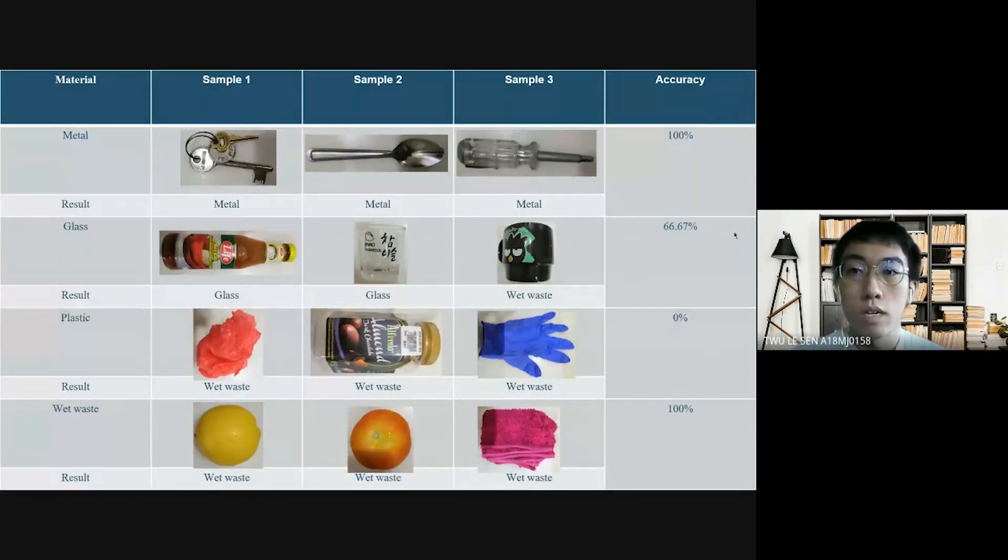So that's all of our project demo part. Next I will pass to Sulerson. This is the result table of our project. We already used a lot of materials to calculate the accuracy of the sensor but here we just only use three samples to show the result. From this table we can see that the first one we are using the inductive sensor to detect the metal. And we can see here they are very accurate. The samples we use are a key, a spoon and a screwdriver and all are detected as metal. So the accuracy is 100%.